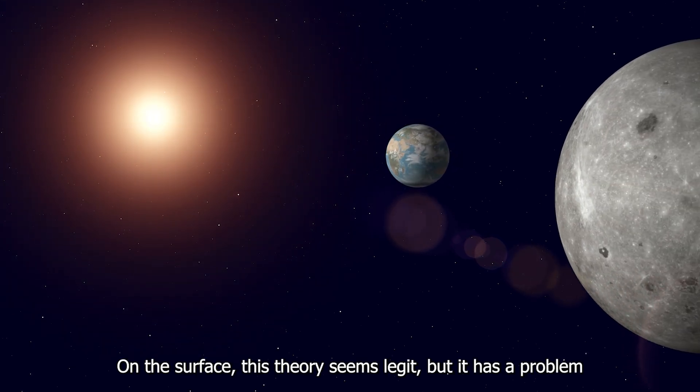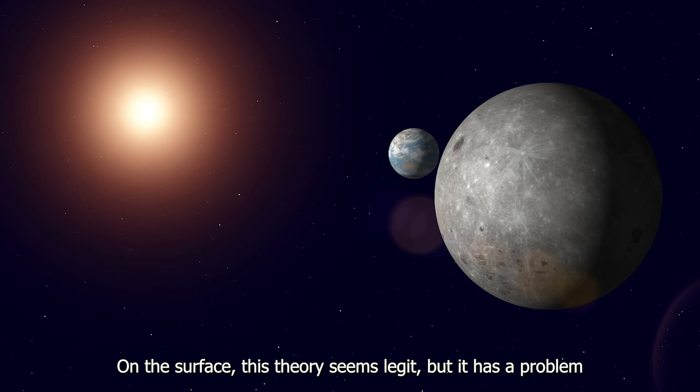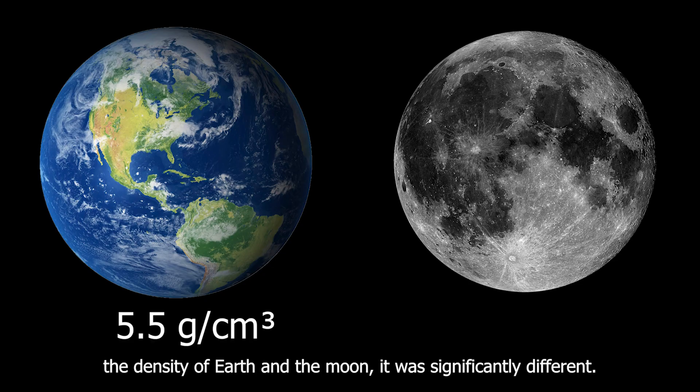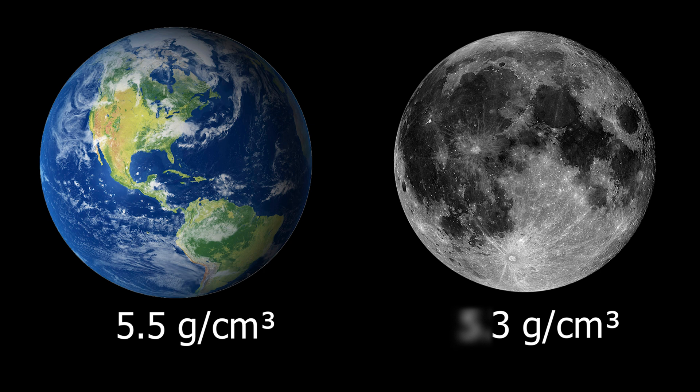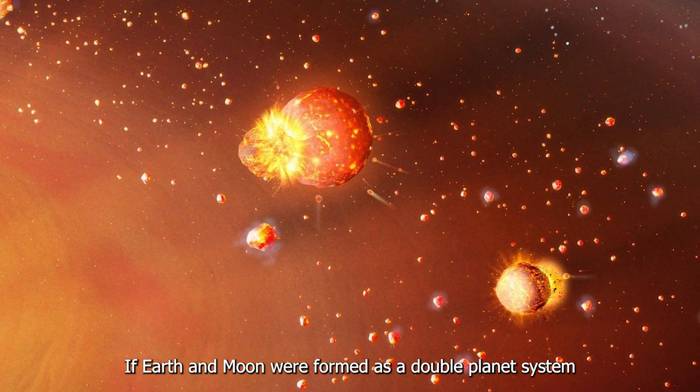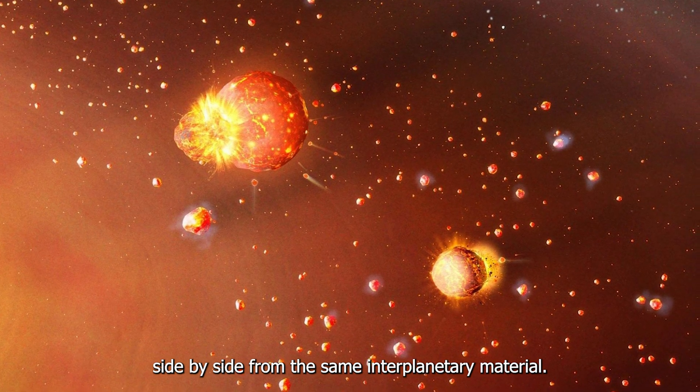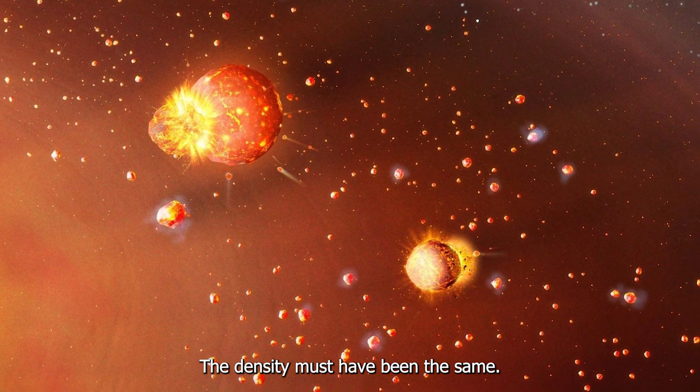On the surface, this theory seems legit, but it has a problem. When researchers studied the density of Earth and the Moon, it was significantly different. If Earth and Moon were formed as a double planet system side by side from the same interplanetary material, their density must have been the same.